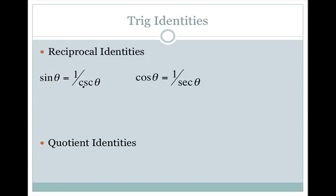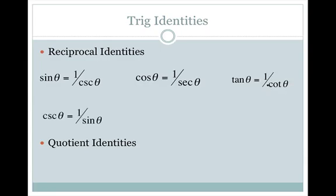Likewise, cosine and secant are reciprocals of each other, so cosine equals 1 over secant theta. Tangent and cotangent are reciprocals, so tangent theta equals 1 over cotangent theta. We can also rewrite them flipped: cosecant equals 1 over sine theta, secant equals 1 over cosine theta, and cotangent equals 1 over tangent theta. These are just your properties of reciprocals — they equal each other.